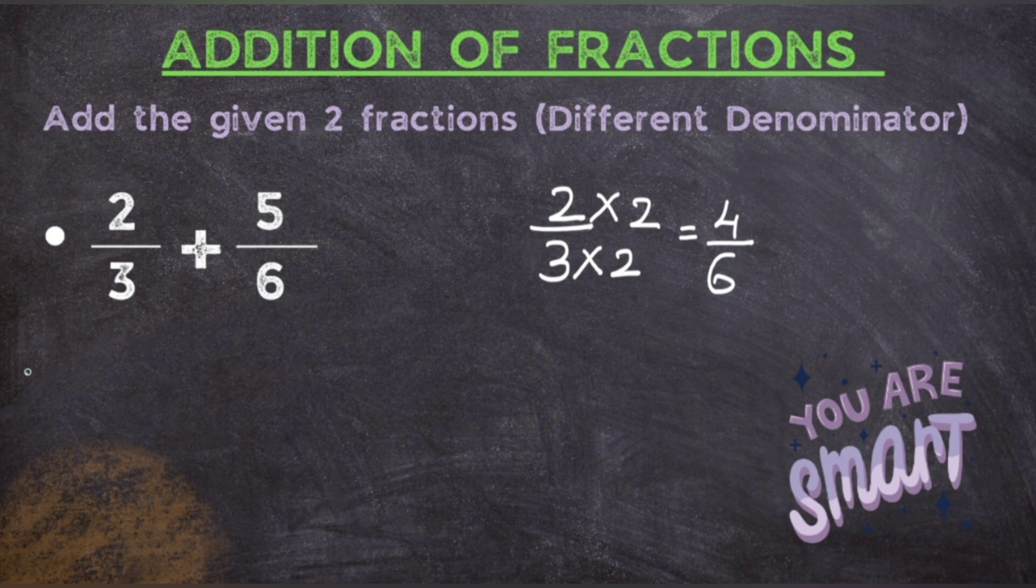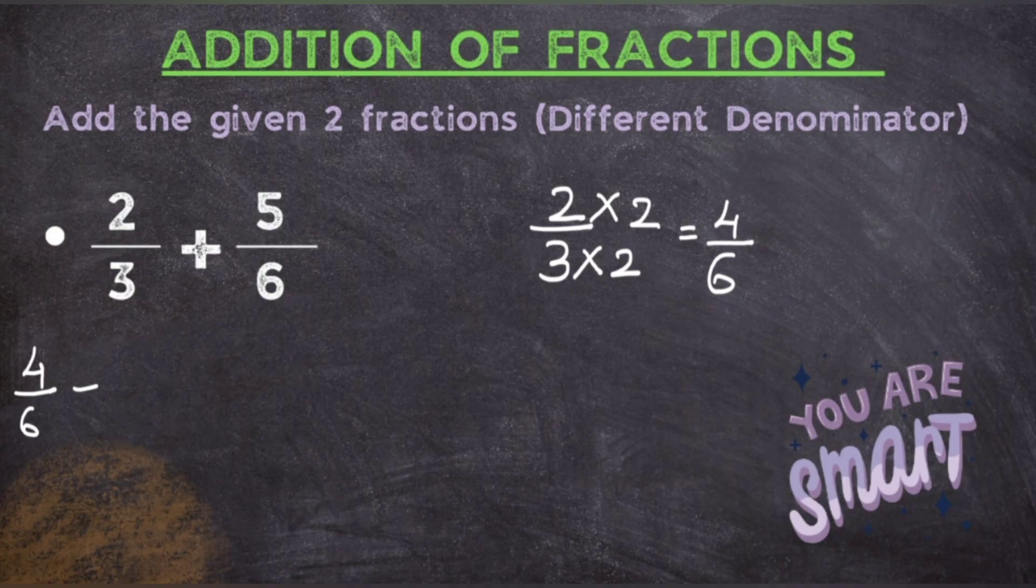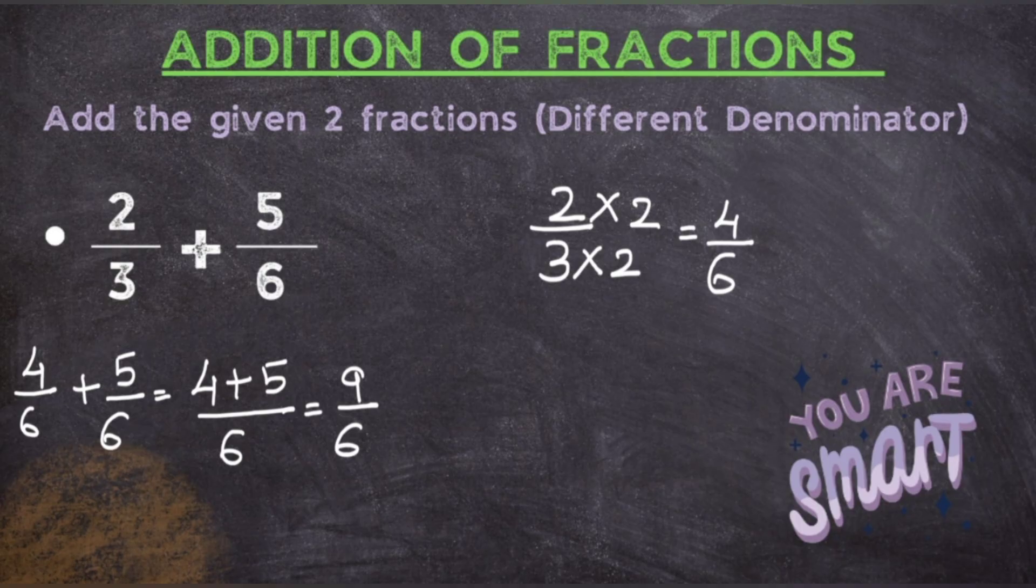Now instead of 2 upon 3, we are going to take the fraction as 4 upon 6. Now go and add 4 upon 6 by 5 upon 6. Easy! Simply add the numerators, get an answer as 9 upon 6. Now what do you observe? Will this be a final answer? No. Why?